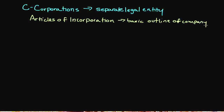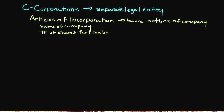The Articles of Incorporation simply establishes the basic outline of the company. Some common things it will include are the name of the company, the number of shares that can be issued, the names of the individuals on the board of directors, and things like the location — where the company is going to be based out of. Just outlining some of the fundamental information you would need to know about a company.